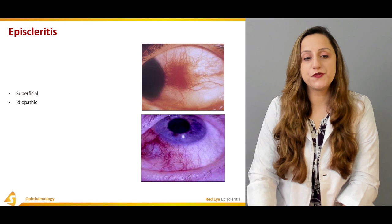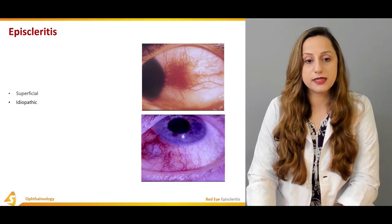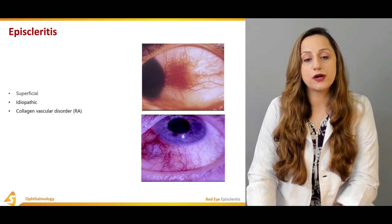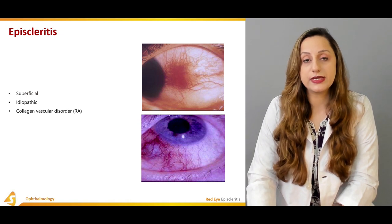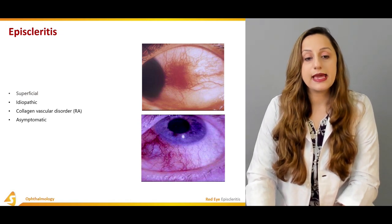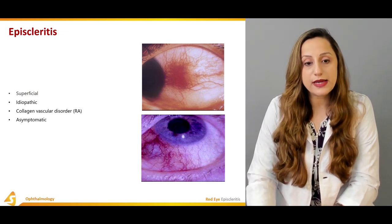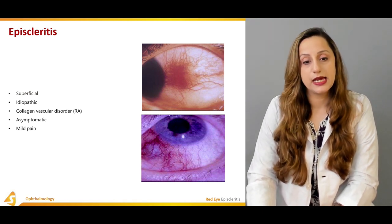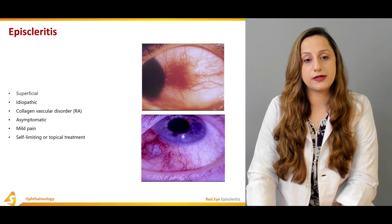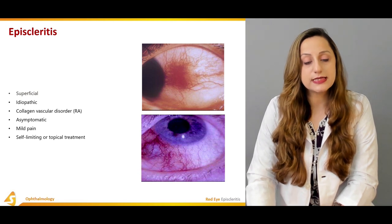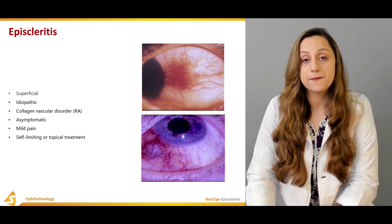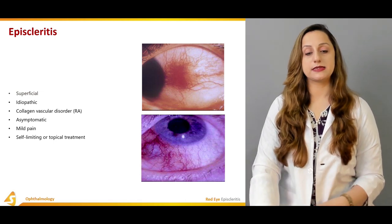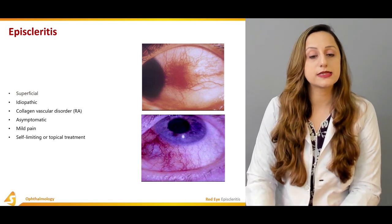Episcleritis is usually superficial and idiopathic in nature. It is usually associated with collagen vascular diseases such as rheumatoid arthritis. It is asymptomatic in many cases, though mild pain may be present. It is a self-limiting disease, and treatment is usually topical antibiotics.